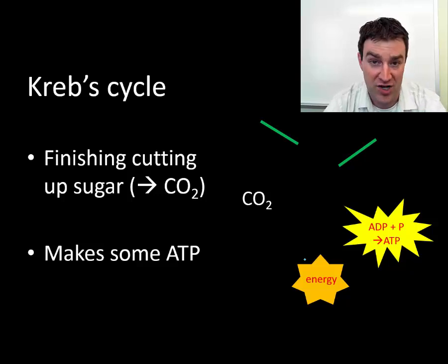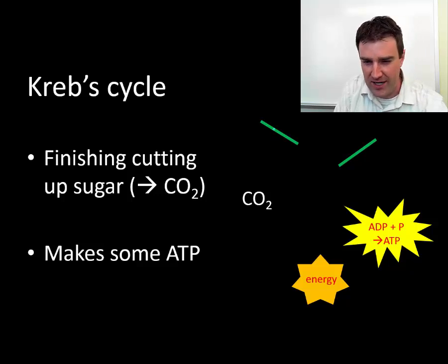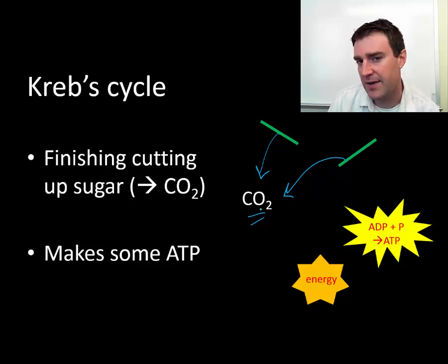So what are we doing in the process? We are just finishing cutting up the sugar. We saw that in glycolysis we cut up the glucose but there's more to cut up and so we can actually finish cutting up the sugar. And when you fully cut up the sugar you turn it into carbon dioxide. It's the sugar that becomes the CO2, it's the C6H12O6 that becomes the CO2 in the end products.